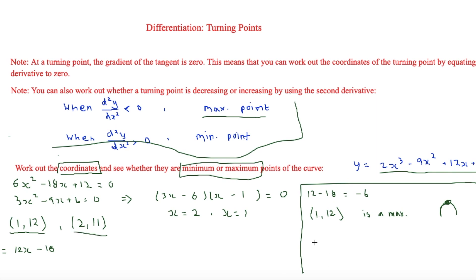So then we have to put in this one. If we put in 2 now then we're going to get 24 - 18 which is equal to 6 this time. Now 6 is more than 0 so that would mean that (2, 11) is a minimum point.